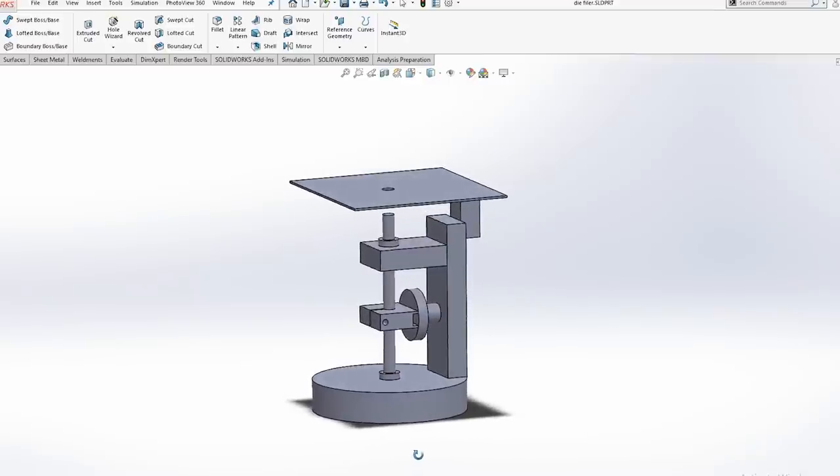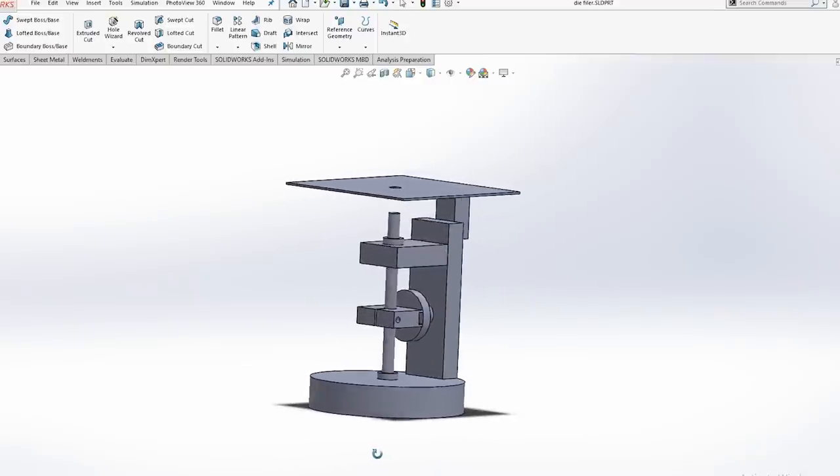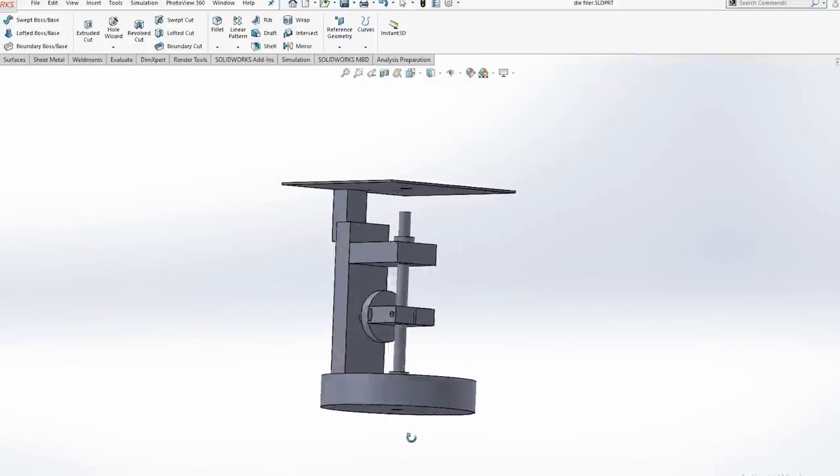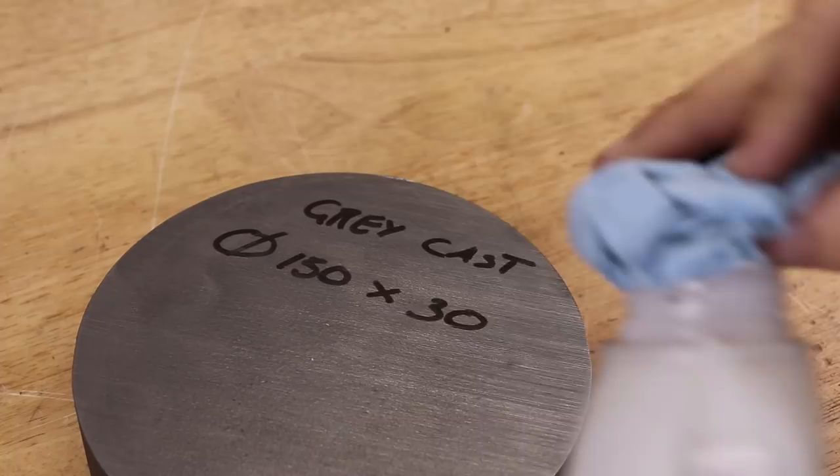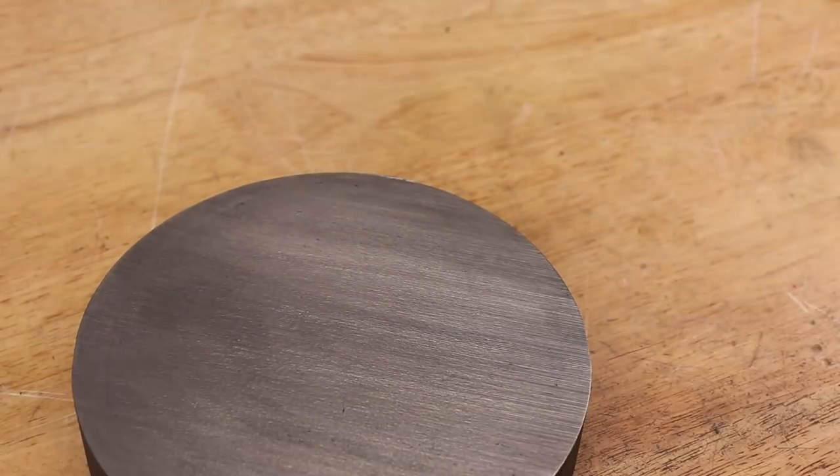I drew up a basic design in CAD to use as a reference for this project. So let's get started. The first thing I'll machine is the base. It's a 150 by 30 mil piece of grey cast iron.